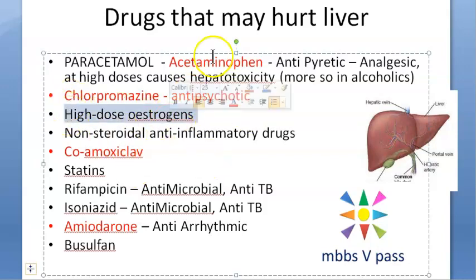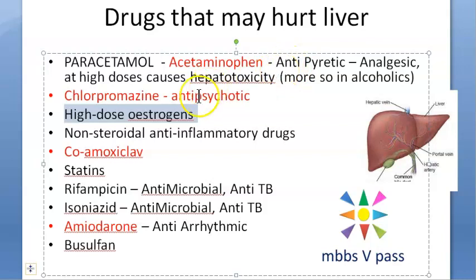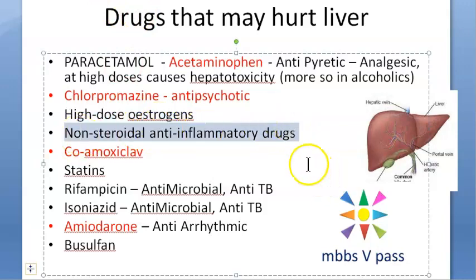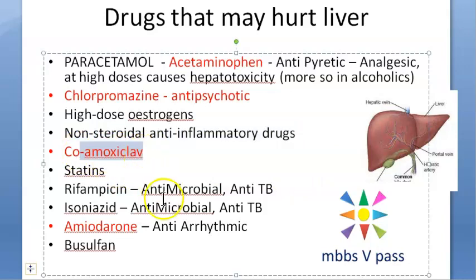High-dose estrogen — if somebody is taking estrogen, you have to warn them that high doses can be damaging to the liver. Remember, people who want to appear more feminine may be taking this. Non-steroidal anti-inflammatory drugs can also come here — think about whether aspirin belongs in this category. This term is very broad.